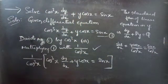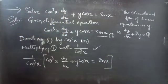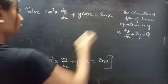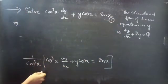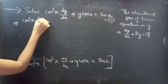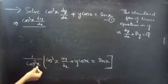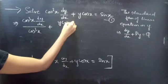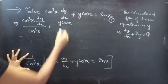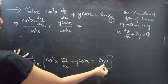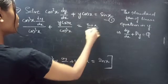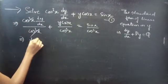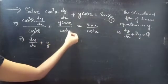You can just follow the procedure. So, let's multiply the given equation. The equation becomes: the first term, cos³x · dy/dx divided by cos³x, plus the second term, y·cos x/cos³x, equals sin x/cos³x. Here cos³x gets cancelled, giving dy/dx, and one cos x gets cancelled, so this becomes dy/dx + y/cos²x = sin x/cos³x.